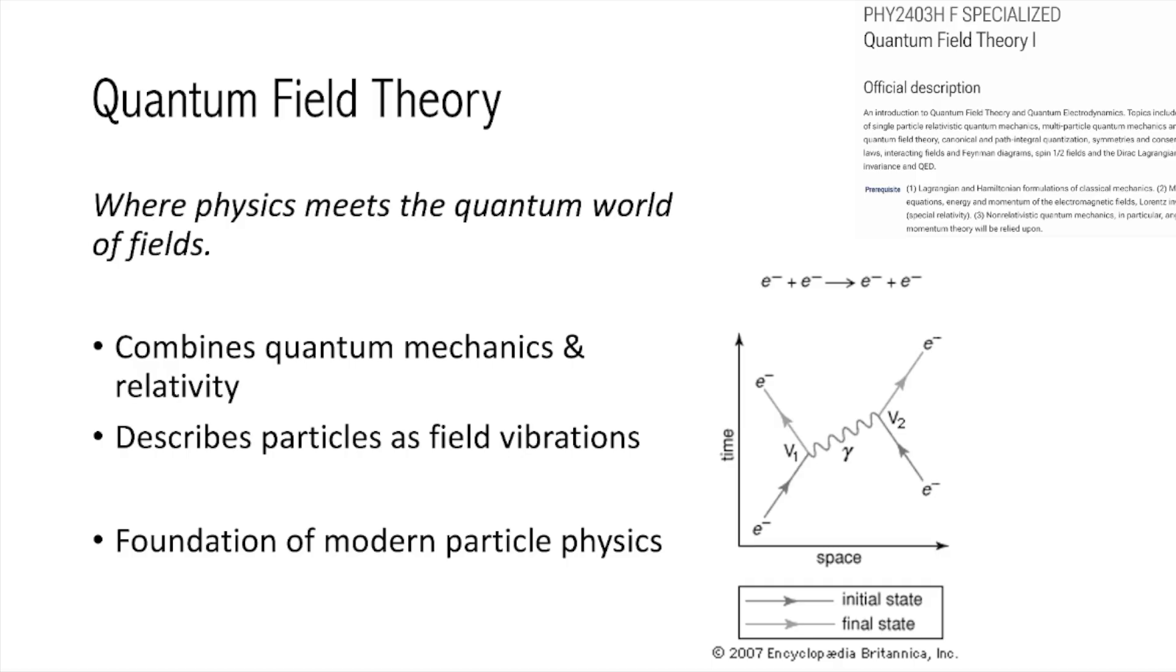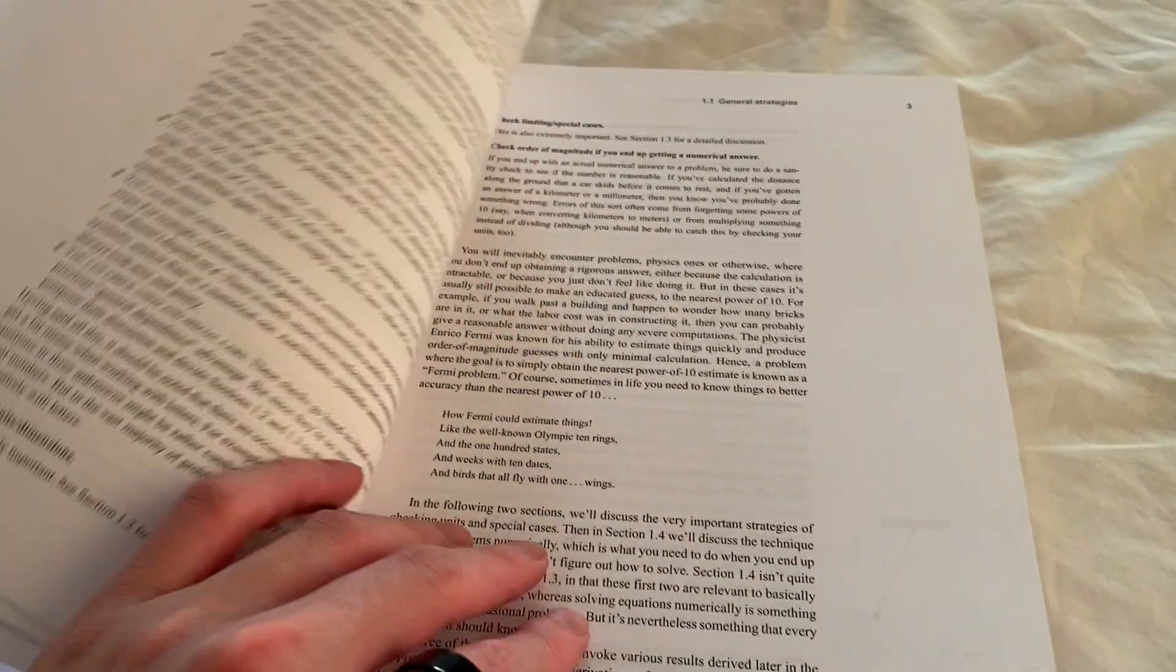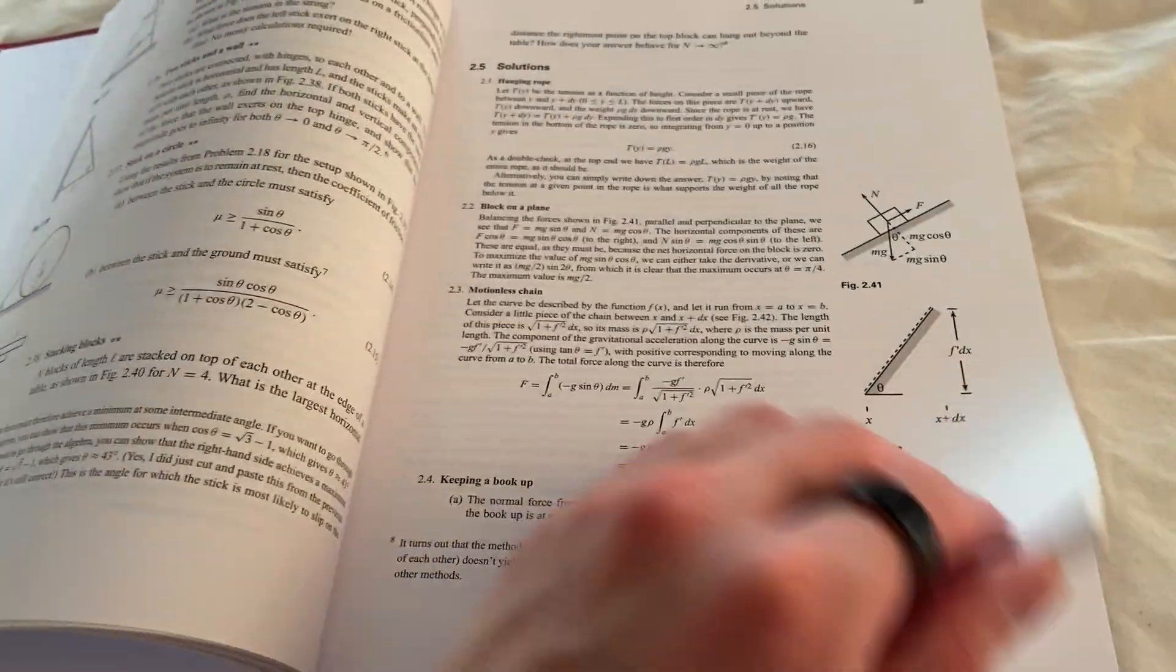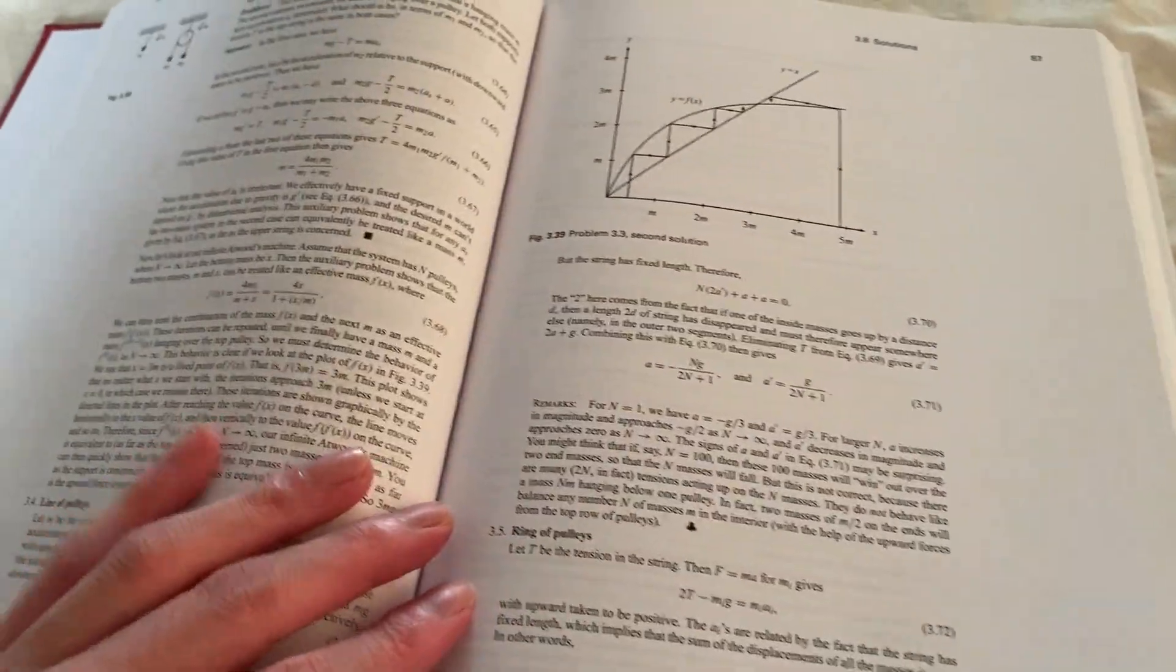Now, let's see the textbooks I recommend for each subject. For classical mechanics, nothing could go wrong with David Morin's book. It's commonly used by Olympiad or JEE advanced students. It's also widely used in many undergraduate physics programs.